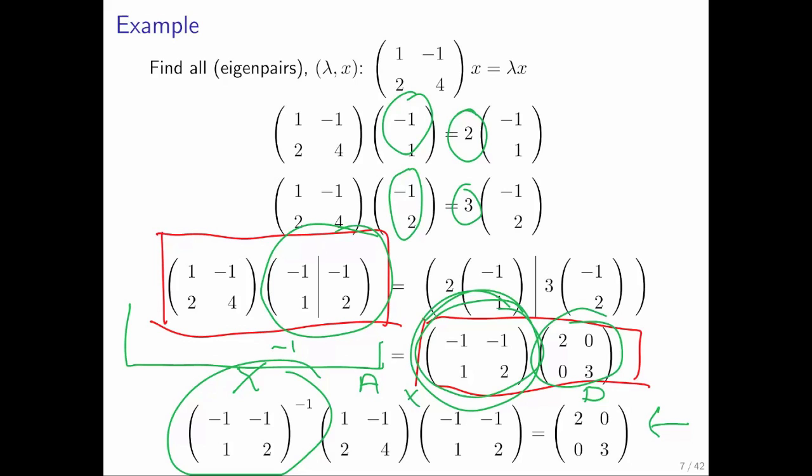That was a concrete example. And notice the steps that we went through. We found the eigenpairs. We made our vector X equal to the matrix that the eigenvectors associated with those eigenvalues as its columns.